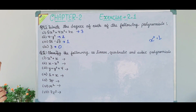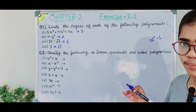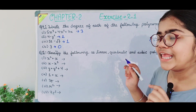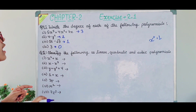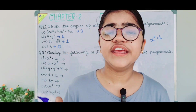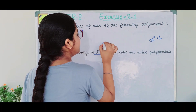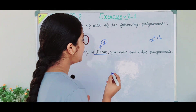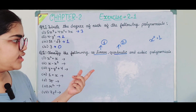The next question says: classify the following as linear, quadratic, and cubic. If the degree is 1 it is linear; if the degree is 2 it is quadratic; if the degree is 3 it is cubic.